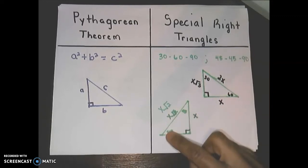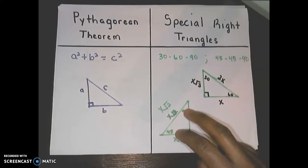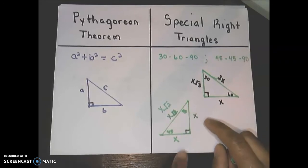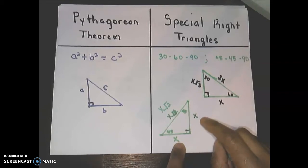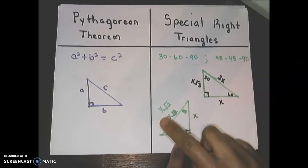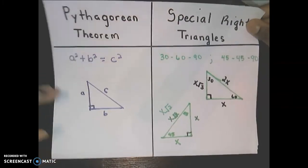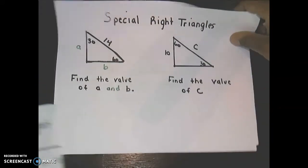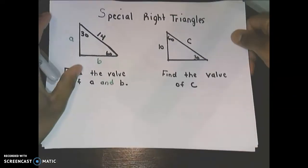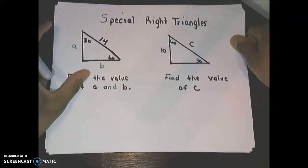For a 45-45-90 triangle, since the two angles are the same, it's an isosceles triangle, so the two legs are equal — both X. The hypotenuse is X times the square root of 2. Pause the video and take those notes if you don't already have them in your notebook. Then let's move on to our first example with special right triangles.